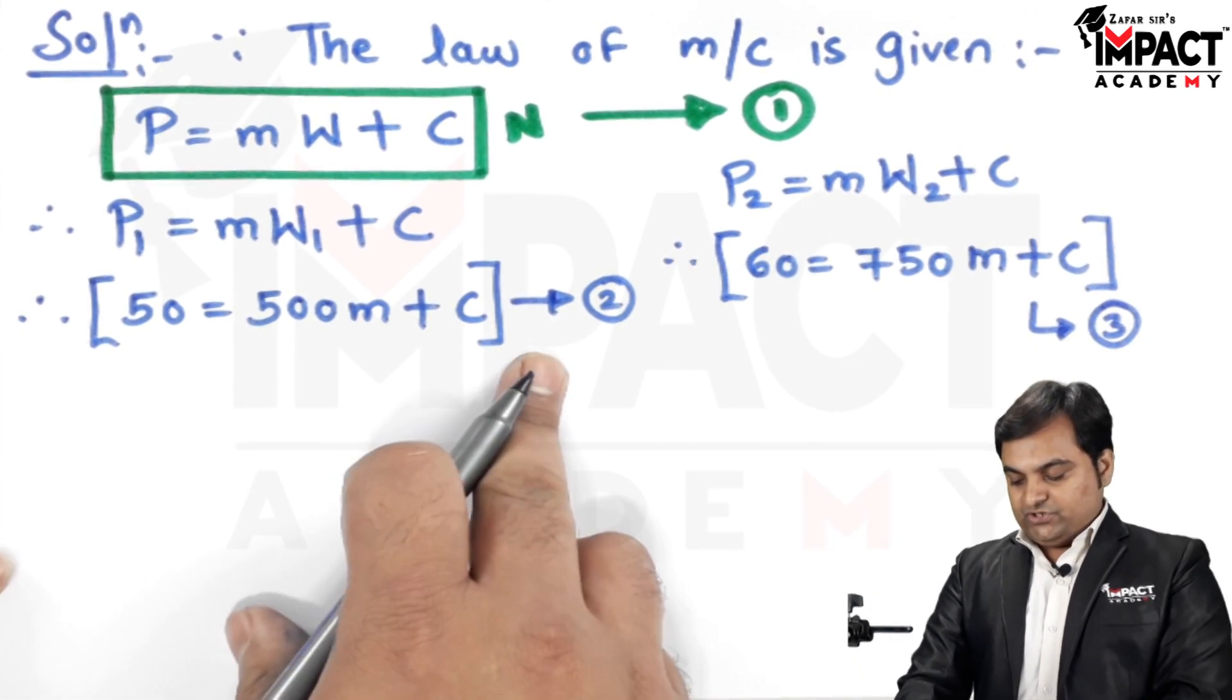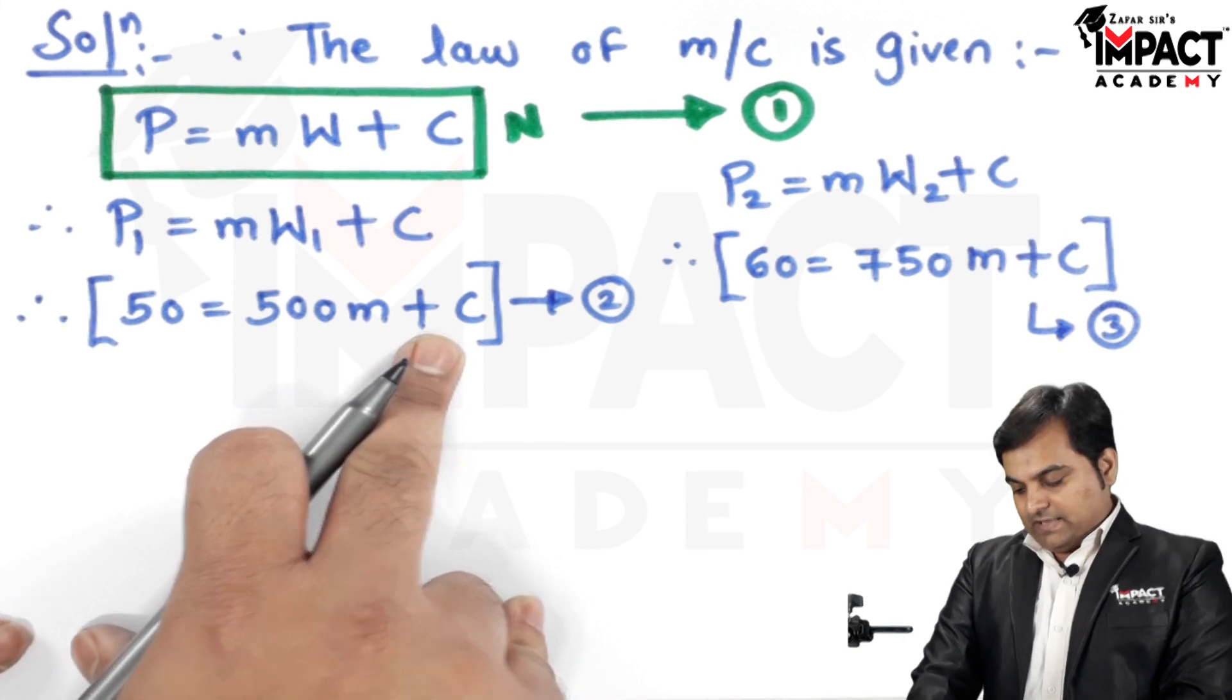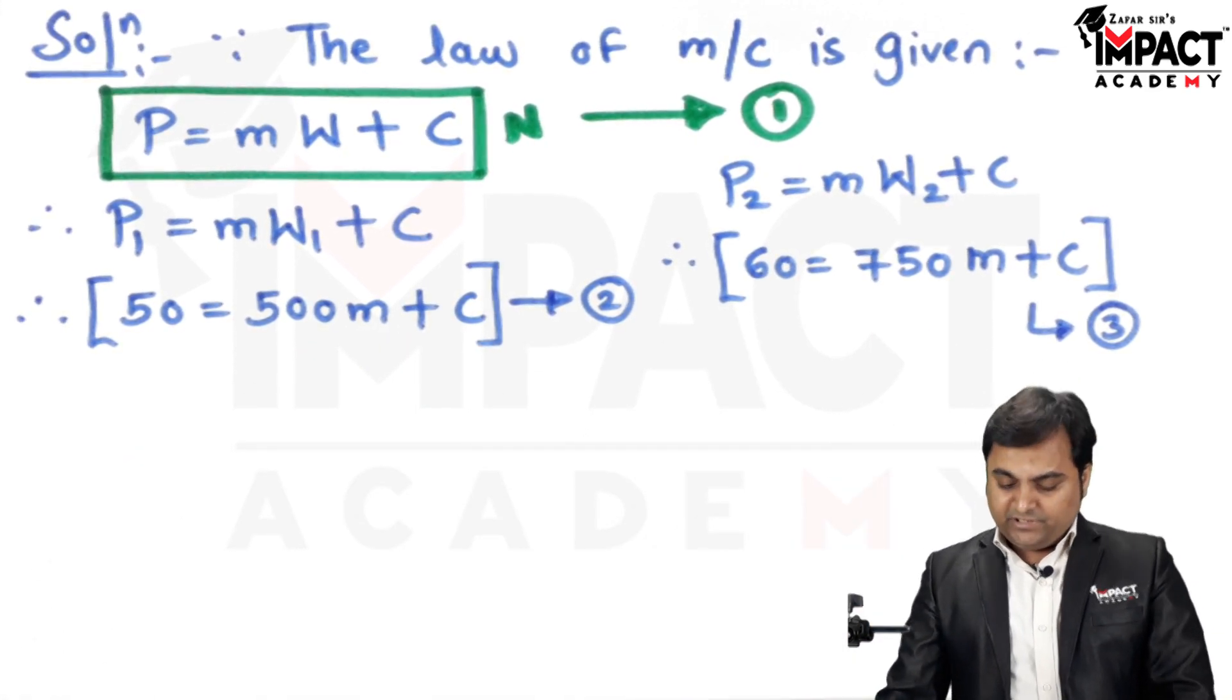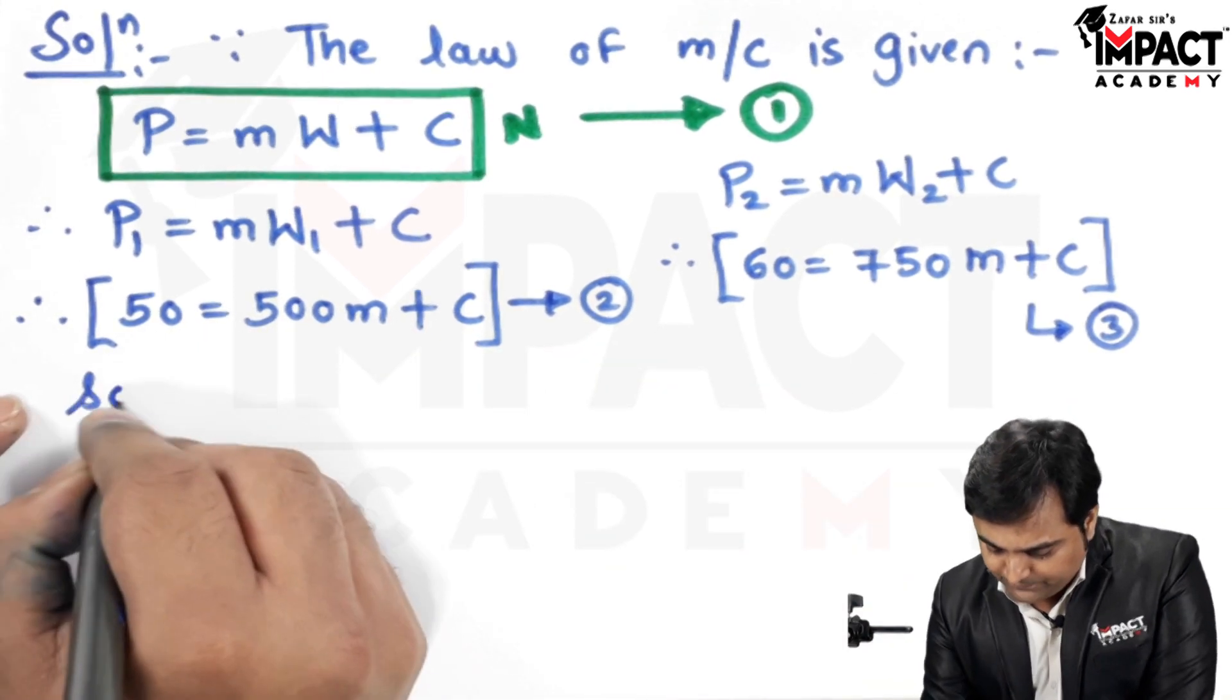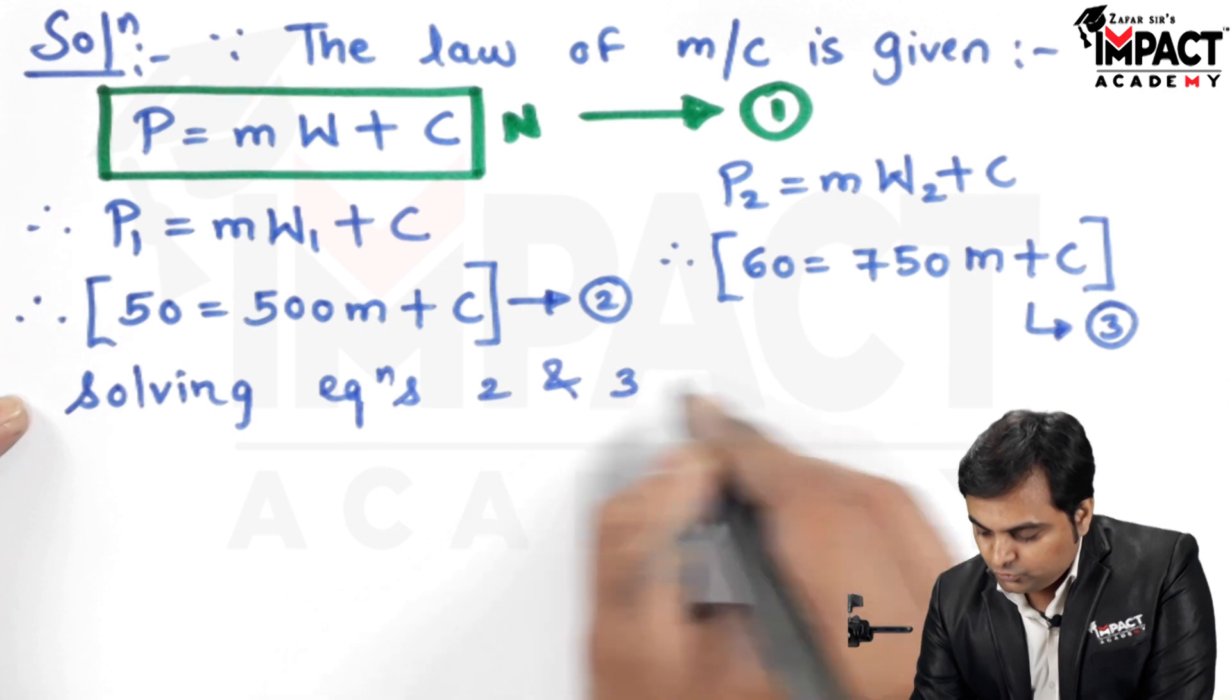Now by looking into equations 2 and 3, we can see there are two unknowns which are M and C, and there are two equations, so it can be solved simultaneously. Solving equations 2 and 3.